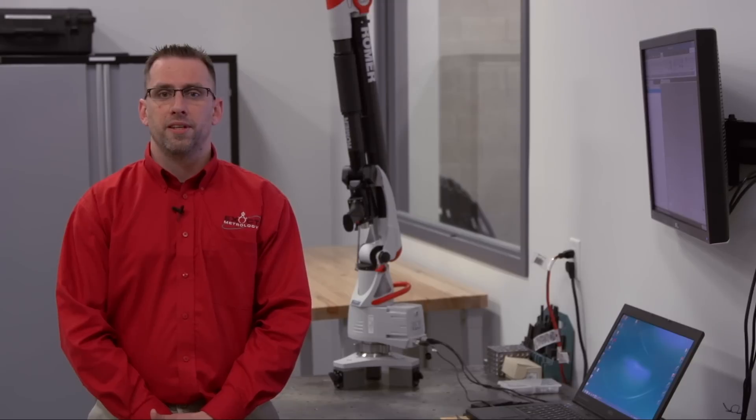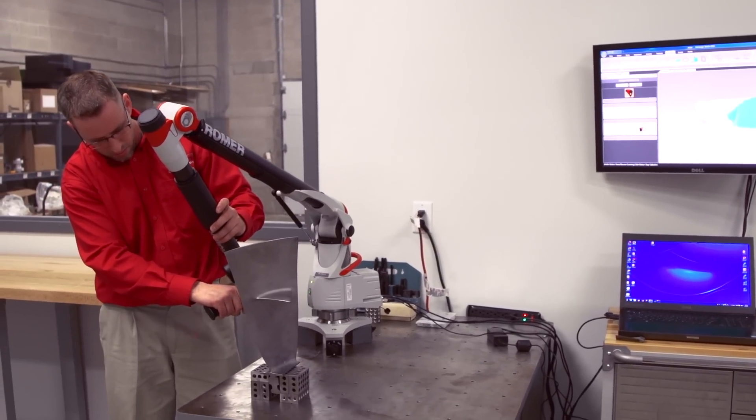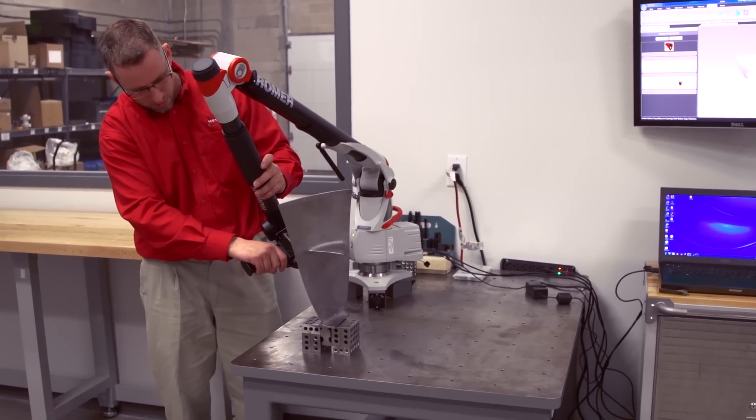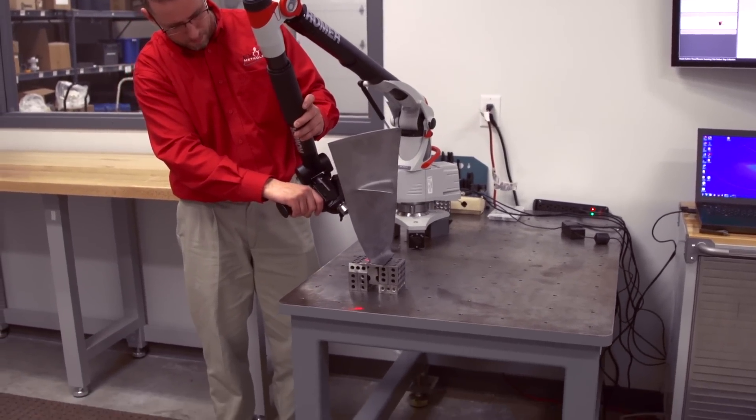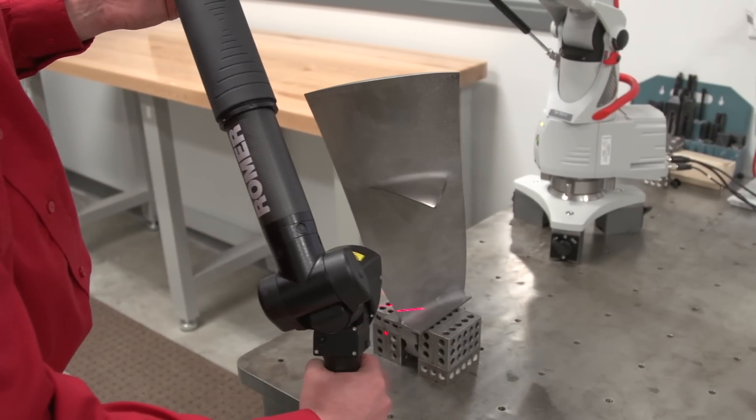We'll also cover how 3D data can be a powerful asset to the reverse engineering process. This particular system is a Hexagon Absolute portable CMM arm with an integrated laser scanning head. The laser allows us to capture surface geometry at up to 50,000 points per second.